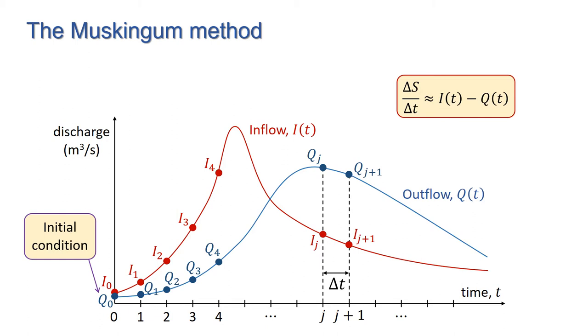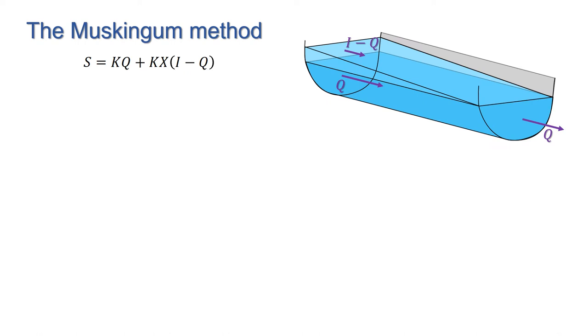This update procedure will be written as a formula, giving q at time step j plus 1 in terms of q_j, i_j, and i_(j+1). Okay, so far this is all very general. The next step, which is specific to the Muskingum method, is to derive a relationship between the storage inflow and outflow of the reach that will enable us to generate the relationship between i and q at time steps j and j plus 1.